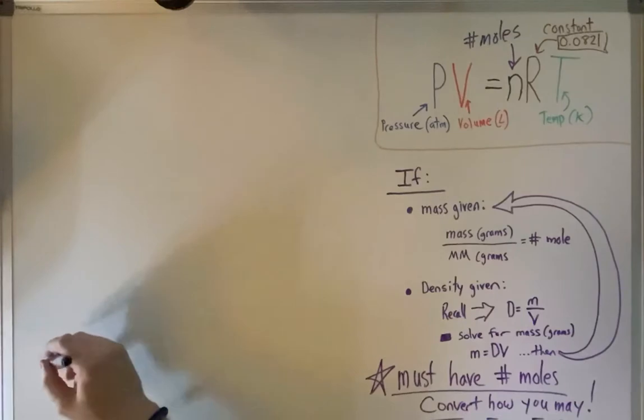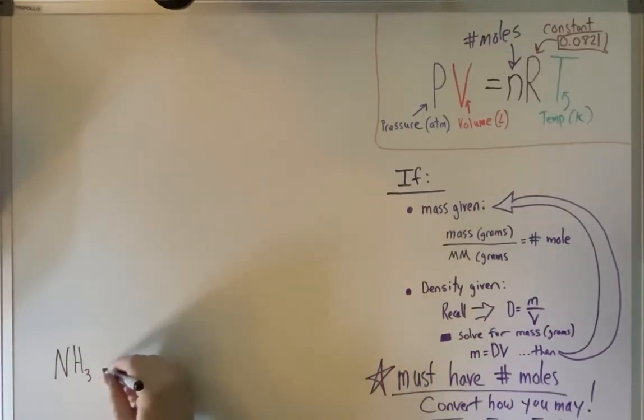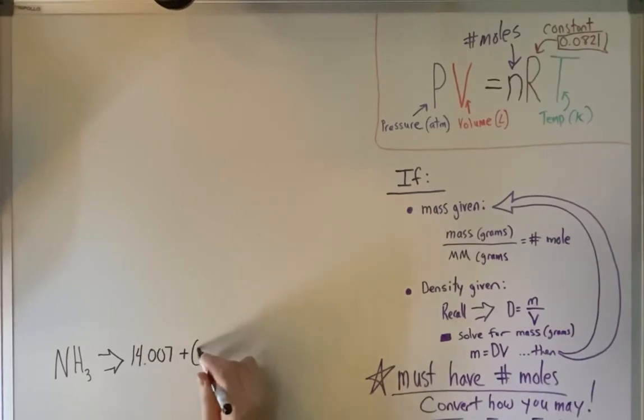Just remember ammonia is NH3 and the molar mass of this is going to be 14.007 plus 3 times 1.008.